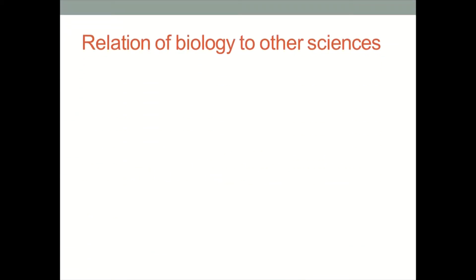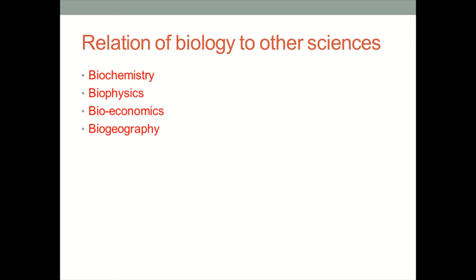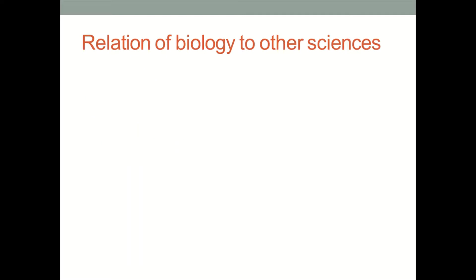Now we are going to talk about the relationship of biology to other sciences — how biology is related with other sciences. The sciences by which biology is related include: biochemistry, biophysics, bioeconomics, biogeography, and biomathematics (also called biometry). We are now going to study them in detail.